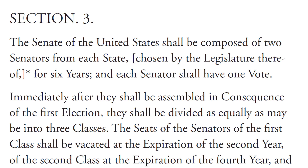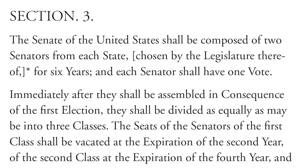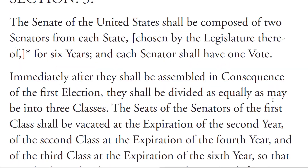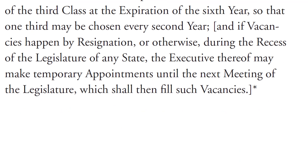The seats of the senators of the first class shall be vacated at the expiration of the second year, of the second class at the expiration of the fourth year, and of the third class at the expiration of the sixth year, so that one-third may be chosen every second year, and if vacancies happen by resignation or otherwise during the recess of the legislature of any state, the executive thereof may make temporary appointments until the next meeting of the legislature, which shall then fill such vacancies.